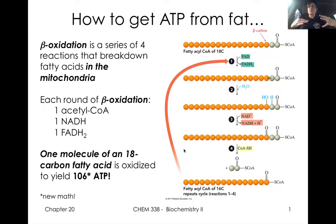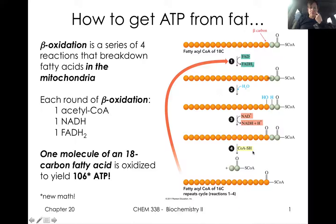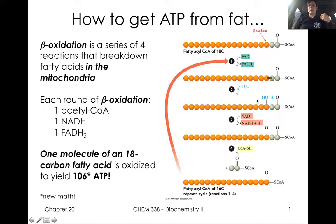Big picture: you get ATP from the breakdown of fats when you take these long chains of essentially hydrocarbons, and we're going to snip them apart two carbons at a time, making acetyl-CoA, shortening our fatty acid by two carbons each time. Not only do we have acetyl-CoA molecules that can go into the citric acid cycle, but going through this process of beta-oxidation also generates FADH2 and NADH in two separate oxidation steps.